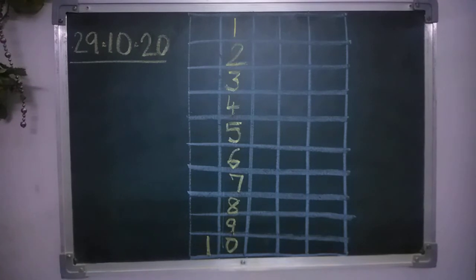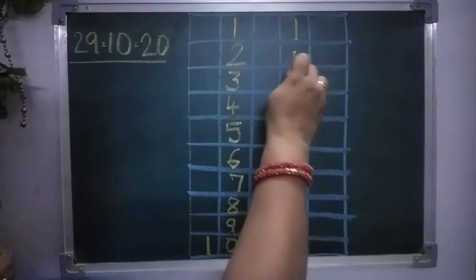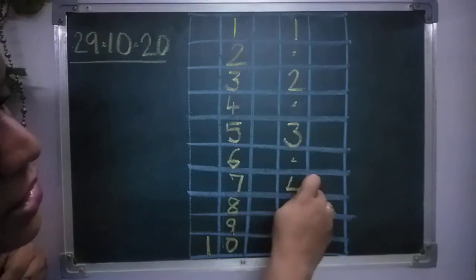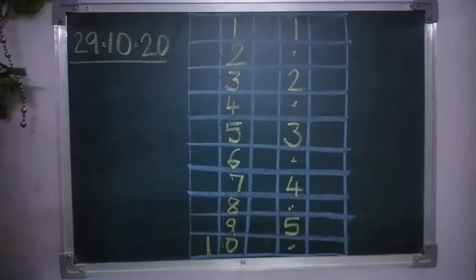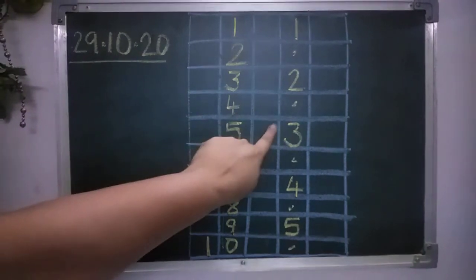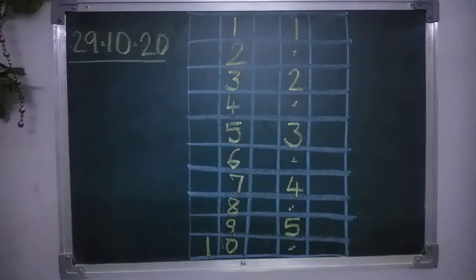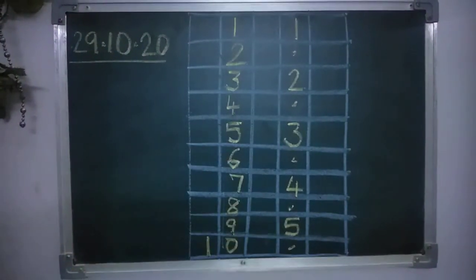Mai ne dot nahi lagaya hai, lekin jab aap likho ge toh aap dot likha ho ge aise, 1, dot 2, dot 3, dot 4, dot 5, dot 6, dot 7, dot 8, dot 9, dot 10. Aapko aise likhna hai dot lagha lagha ke pura 10 tak, aise bina dot lagha hai mat likhna. Dot dot lagha lagha ke 1, 2, 3, 4, 5, 6, 7, 8, 9, 10. Aur 10 hota hai 9 ke niche 0 aur 1 alag se.